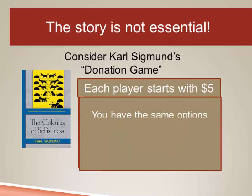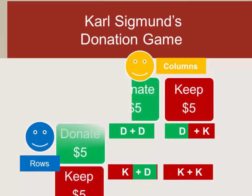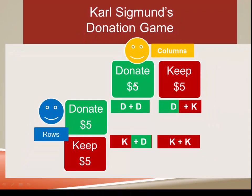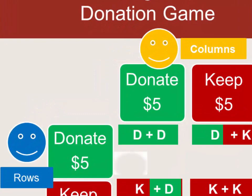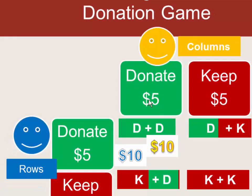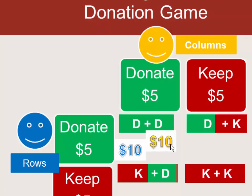Each player has a choice to donate or keep their $5, and the cells mark the intersection of these choices. If both players donate $5, they each receive $10 — jointly $20, twice as much as they started with. We might think that's the obvious thing to do, but as it turns out, it's not.